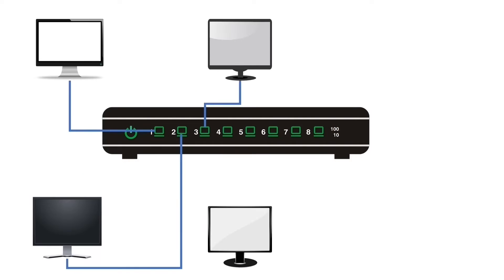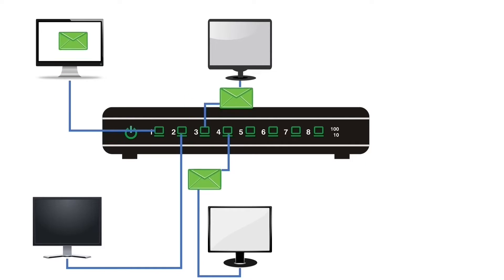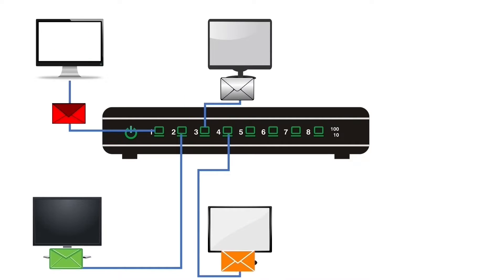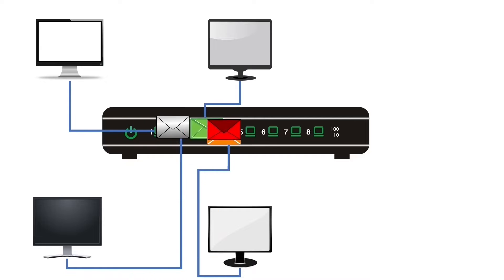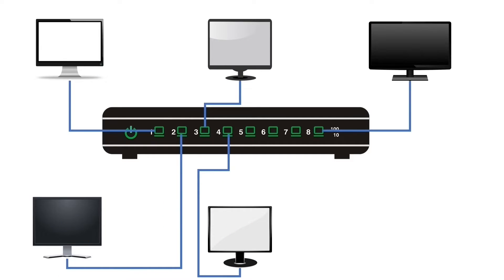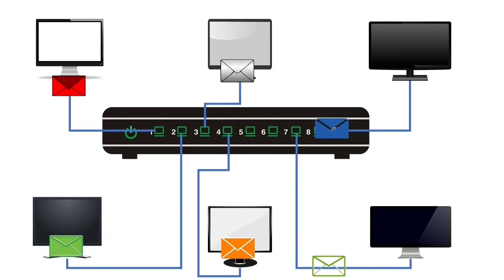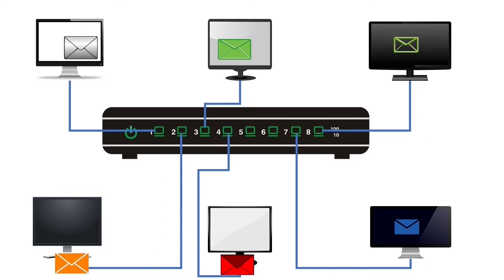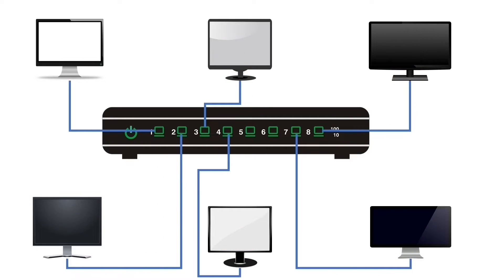A LAN is a group of devices connected to a single Ethernet network. A broadcast message is a message that reaches all devices in the network. Devices use broadcast messages to perform many essential tasks. The more devices you add to a network, the more broadcast messages it will have, and broadcast messages reduce network performance.